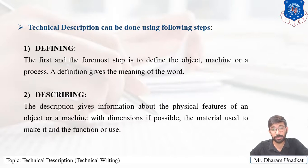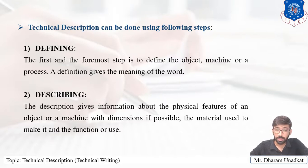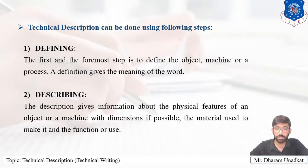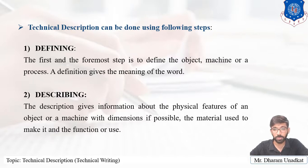The first and most obvious step is to define the object, product, machine, or process. A definition gives the meaning of the word. When we define an object or machine, we try to make it clear to the reader about what it is. When we purchase a product we know nothing about, the first two pages defining the product give us clarity — this is the definition part. The definition is for those who have heard the word for the first time, so it is important to define before we describe anything.